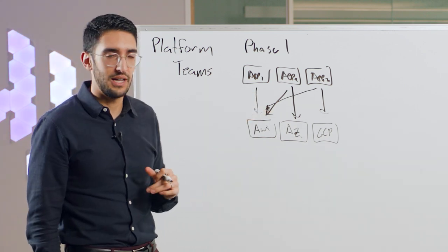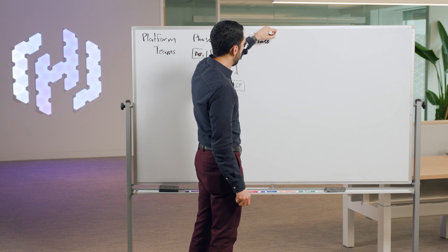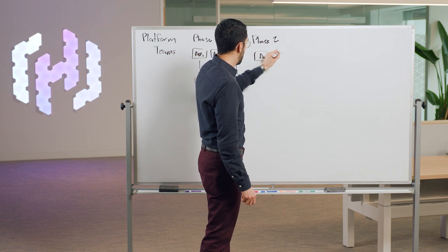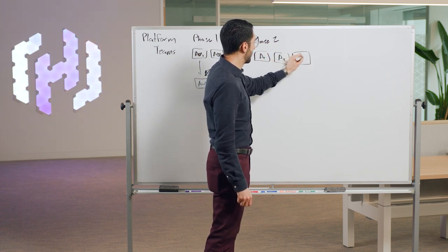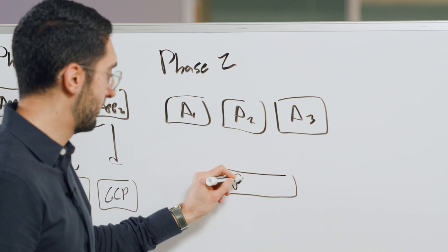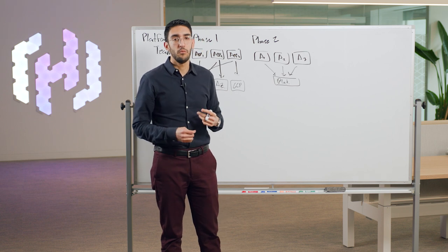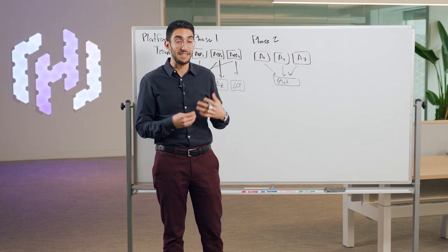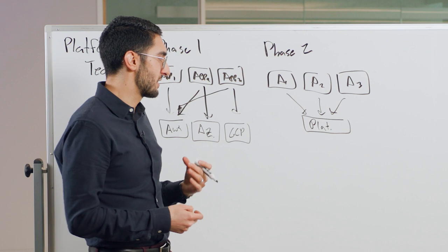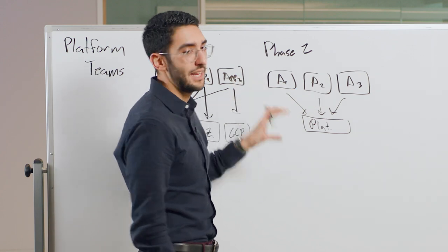So this gets you into kind of the phase two, as we often call it. Where you still have all the different application teams that are doing their thing, but now we say, okay, great, application team one, application team two, application team three, these should not all have their own unique approach to doing cloud adoption. Instead, we should create a central platform team. Different organizations might call this a different thing. We call it sort of a platform team. Some people call this the cloud team. It might be the DevOps team, the SRE team. I think it comes by different names, cloud center of excellence in some organizations.